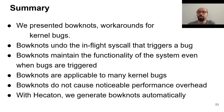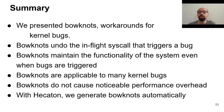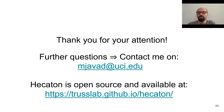In summary, we presented bonots — a workaround for kernel bugs. Bonots undo the in-flight syscall that triggers the bug, maintain the functionality of the system even when bugs are triggered, and are applicable to many kernel bugs. They do not cause noticeable performance overhead, and with Hecaton you can generate them automatically. Thank you all for your attention. If you have further questions, please do not hesitate to contact me by email. Hecaton is open source at the following link.